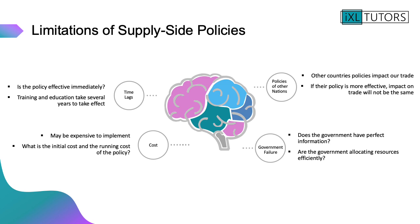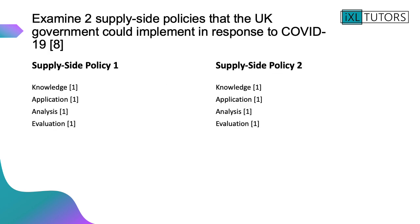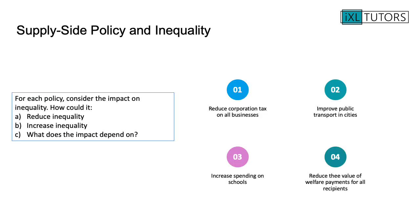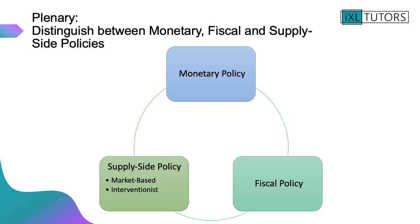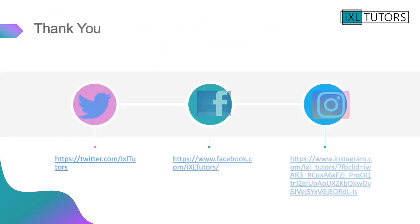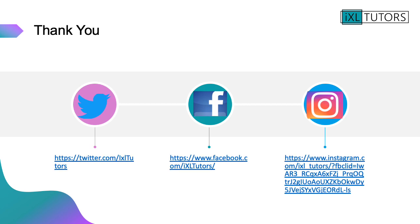The last thing to do — as this is the end of government policy, having looked at monetary policy, fiscal policy, and supply side policy — is to distinguish between the three different types of policy: what are they, give some examples of each, and make sure you can do that really clearly. Supply side policy. Thank you very much.